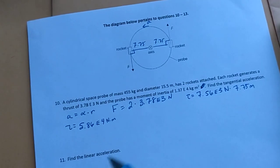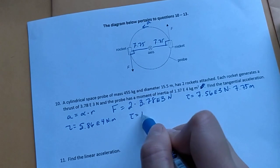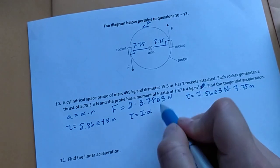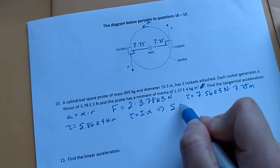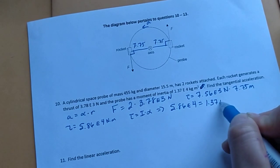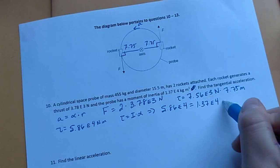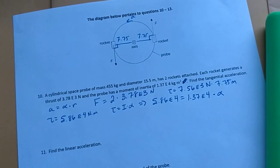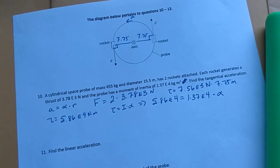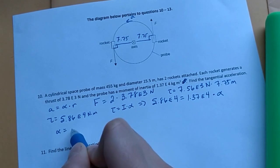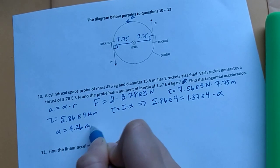And just like we've been doing many problems now, torque also equals I times alpha. We know the moment of inertia already. We will solve for alpha now. So the torque is 5.86 E4. Set that equal to the moment of inertia, 1.37 E4 times alpha. Okay. So I'll divide by 1.37 E4. So alpha the angular acceleration equals 4.26 rad per second squared.